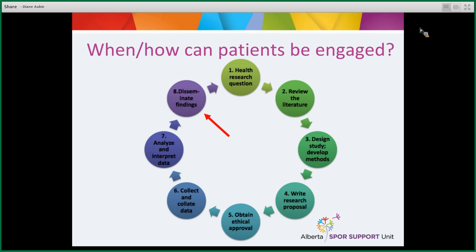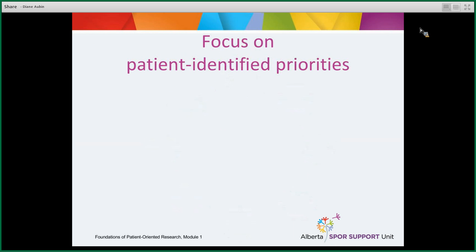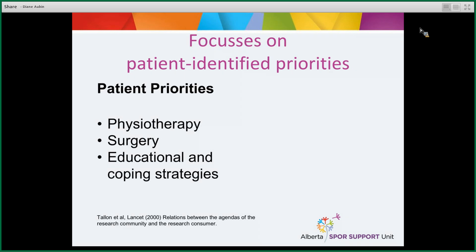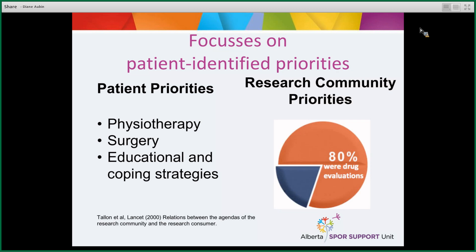Patients can also serve on boards or advisory committees that are often part of research. Regarding patient-identified priorities: traditionally, researchers have set the research agenda, but patients often have very different priorities. For example, in one study on osteoarthritis, patients were asked what their research priorities would be. Their top answers were physiotherapy, surgery, and educational and coping strategies. Yet when researchers looked at what research was actually being done, 80% was about drug evaluations — illustrating how patient priorities can differ significantly from what the research community is studying.